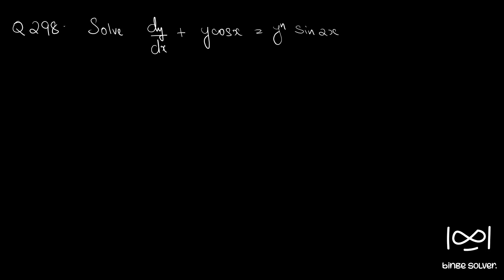Question number 298: solve dy/dx plus y·cos(x) equals y raised to n times sin(2x). Divide by y raised to n to get y raised to minus n, giving y raised to minus n minus 1.